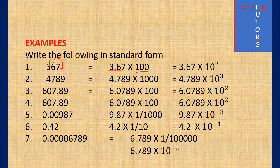Same goes for 4789. By the time you shift the decimal, it would be 1, 2, 3 — you shifted the decimal 3 times backward. So that means 4.789 times 1000, and 1000 is 10 raised to power 3. So your answer is 4.789 times 10 raised to power 3. And you see that 4.789 is a number between 1 and 10, just as 3.67 is also a number between 1 and 10.